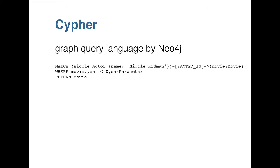Cypher comes from Neo4j, which is very popular. There's also opencypher.org where it's published as a community standard, and other products implement it as well - including an extension for Postgres and a plugin for Redis, which translate Cypher internally to their native query language.